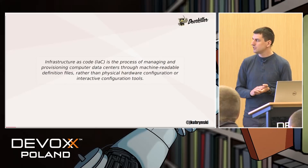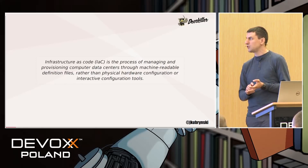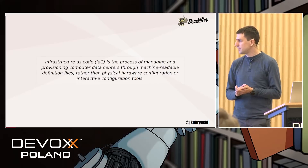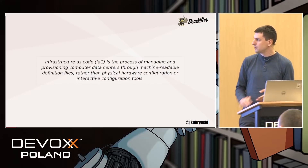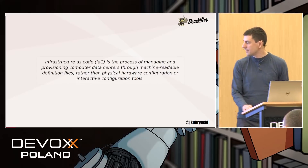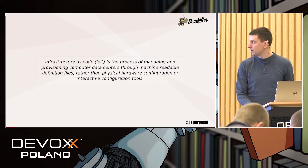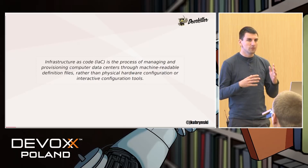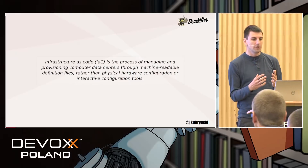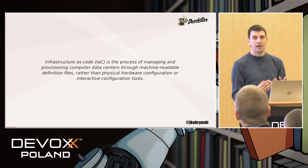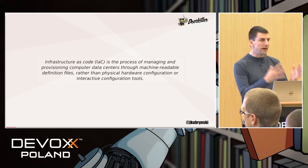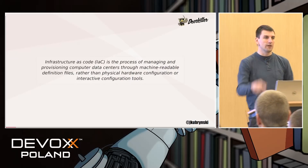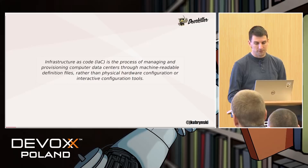First, the weak definition. Infrastructure as code is the process of managing and provisioning computer data centers through machine-readable definition files, rather than physical hardware configuration or interactive configuration tools. Generally, we want to describe the infrastructure — describe all the provisioning stuff in files that are readable for machines, not by clicking and using some interactive stuff.